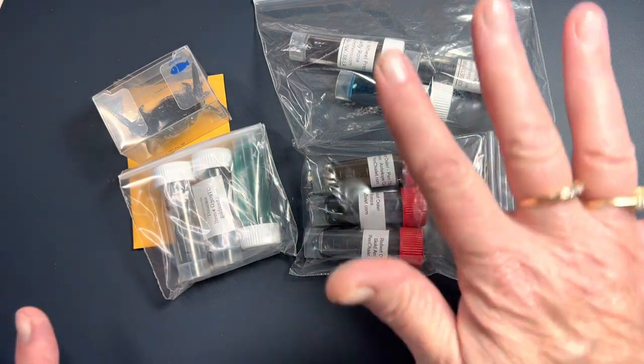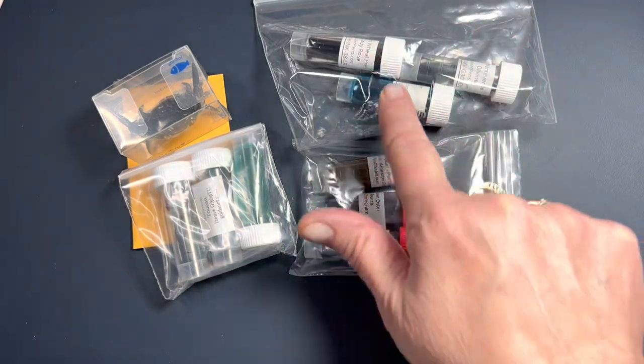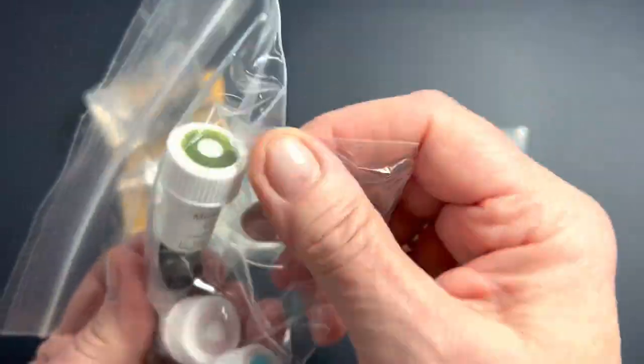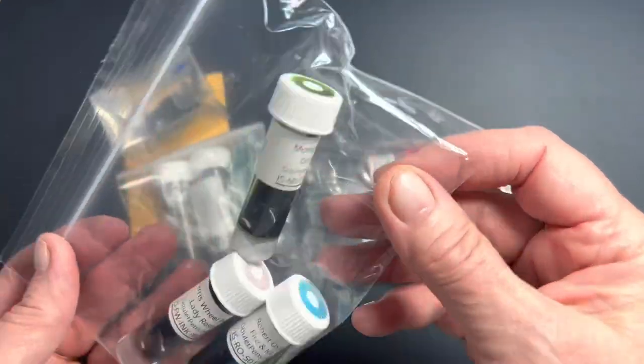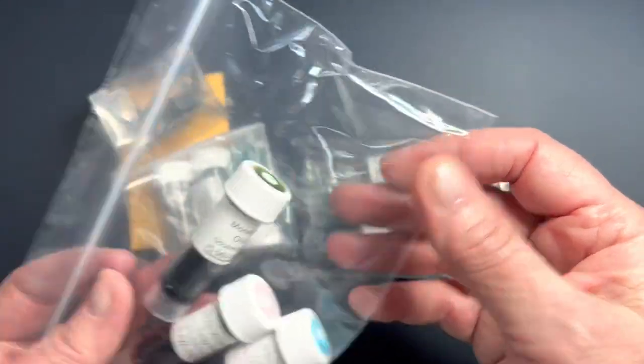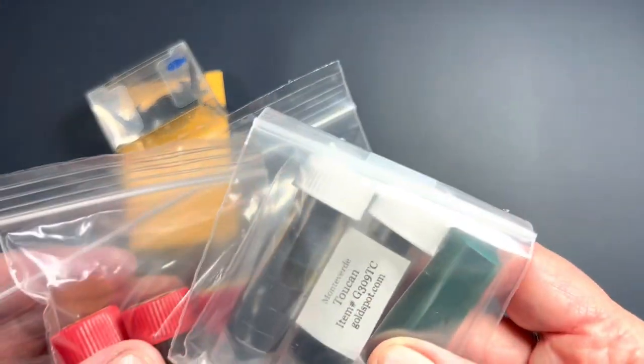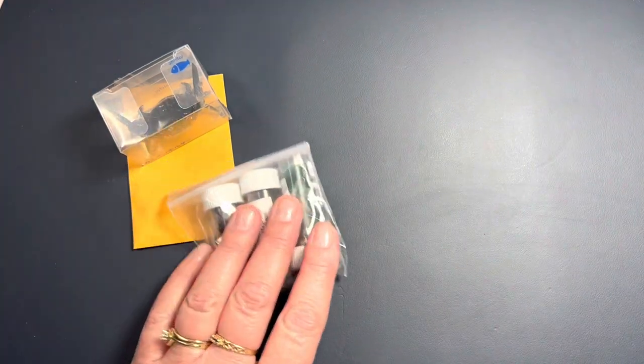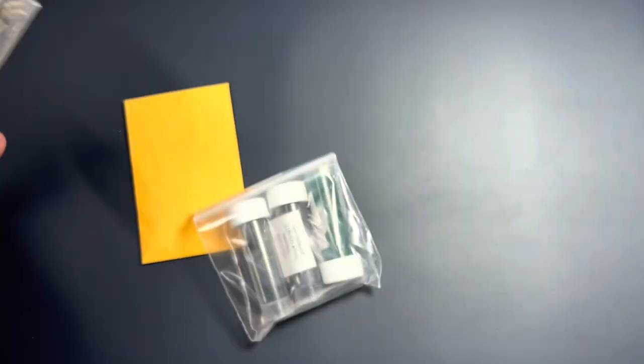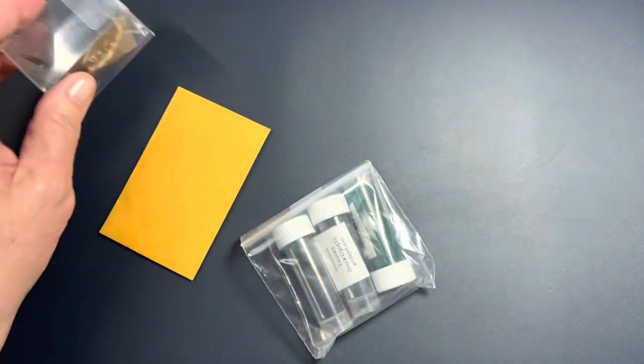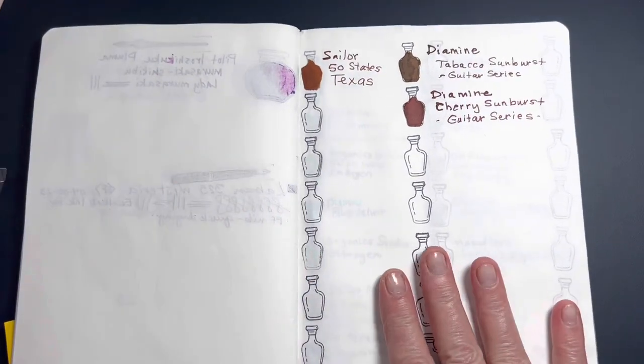So I'll start with the Goulet samples. These I did put the rings on the cap because I was going to put them in storage and I realized that I hadn't swatched them with you. So I'm going to do that and then we will swatch samples from Pen Chalet and then from Goldspot. And this was an order from Goldspot. Some samples, the little crab pen holder, and a Lamy nib. I think it's the Music nib.